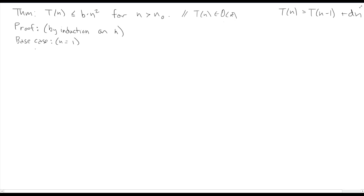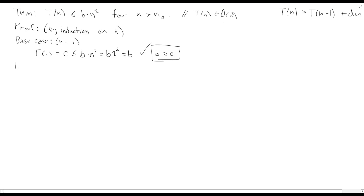For the base case I've chosen n equals one. We need to prove that T(1), which by definition is c, is less than or equal to b times one squared, which is just b. So we pick a b that satisfies this condition — this is correct as long as we find a b that satisfies it. That covers the base case. Let's continue with the inductive hypothesis.